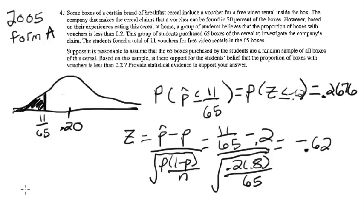And then we want to do our mechanics or our math. So notice I'm making just a little sketch of the shape of the sampling distribution there. 0.2 is in the center. There's our 11 out of 65 cereal boxes, and we're looking for, under the assumption that p is 0.2, what is the probability that in a random sample of 65 cereal boxes, we would have 11 or fewer vouchers. So I have shaded that appropriate area under the curve. And so make sure you got a probability statement. Probability that p hat is less than or equal to 11/65. I also wrote the corresponding probability statement in terms of z-scores, the probability that z is less than or equal to negative 0.62.